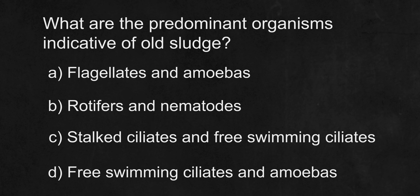What are the predominant organisms indicative of old sludge? A. Flagellates and amoebas. B. Rotifers and nematodes. C. Stalked ciliates and free-swimming ciliates. D. Free-swimming ciliates and amoebas.